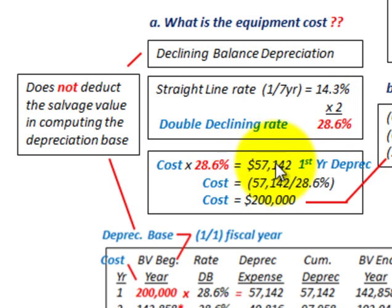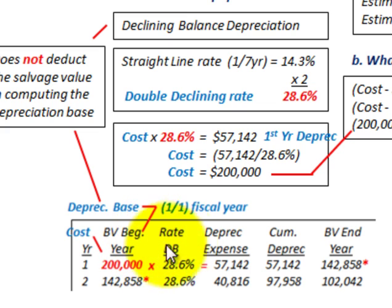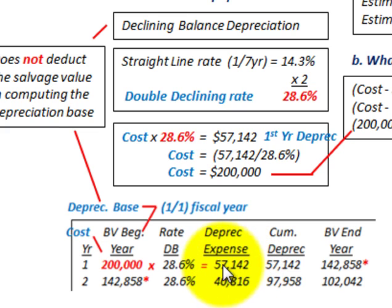So our relationship here is: our beginning cost times 28.6% equals the first year's depreciation. We're given the first year's depreciation off our schedule at $57,142. So our cost is simply $57,142 divided by 28.6%, which gives us a cost of $200,000. We can verify this on our depreciation schedule: $200,000 times 28.6% equals $57,142.